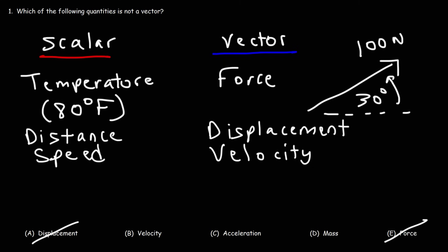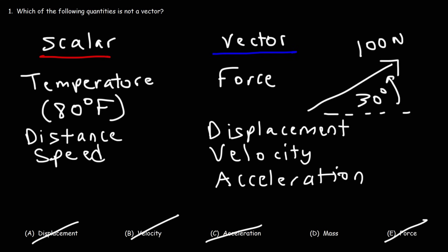Velocity tells you how fast you're going and where you're going, while speed simply tells you how fast you're going. Displacement is the change in position. Acceleration tells you how fast the velocity is changing — acceleration is also a vector. So for this problem, the correct answer is answer choice D. Mass is a scalar quantity.